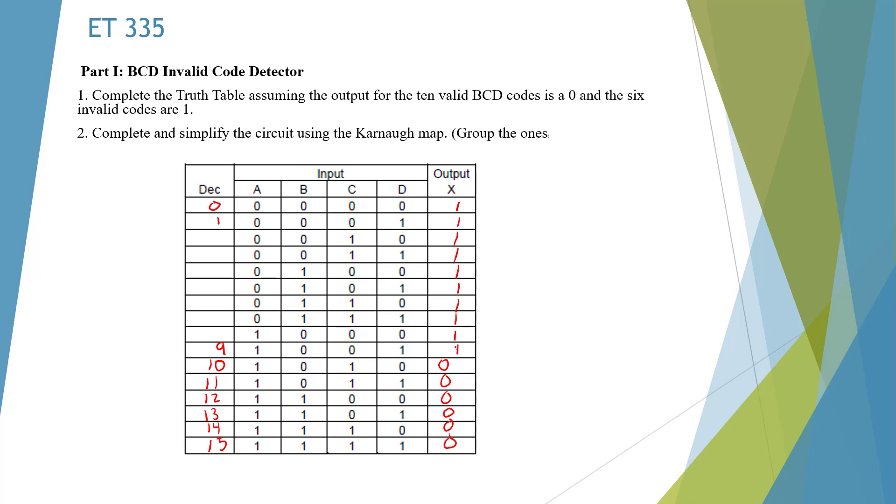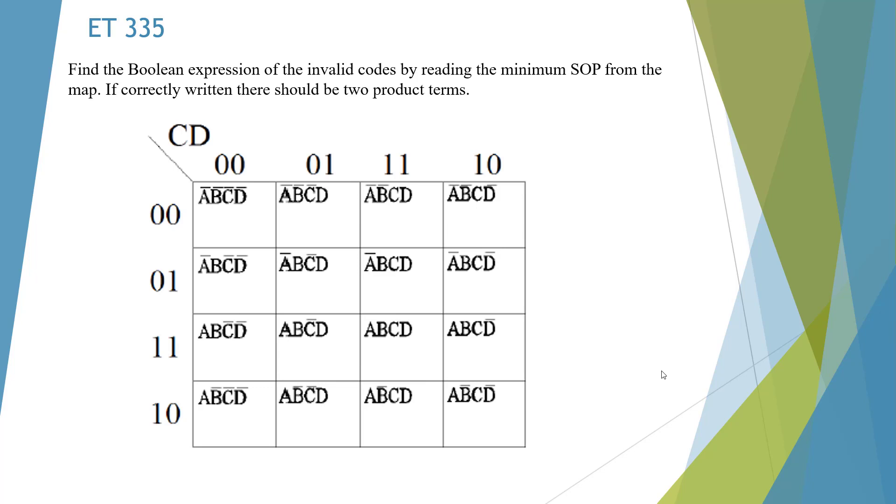And that's our truth table. We could convert these to Boolean equations or we could just transfer the numbers over to our Karnaugh map. And let's do that. Here we have our blank Karnaugh map and let's go and fill in all of the proper codes for a BCD.